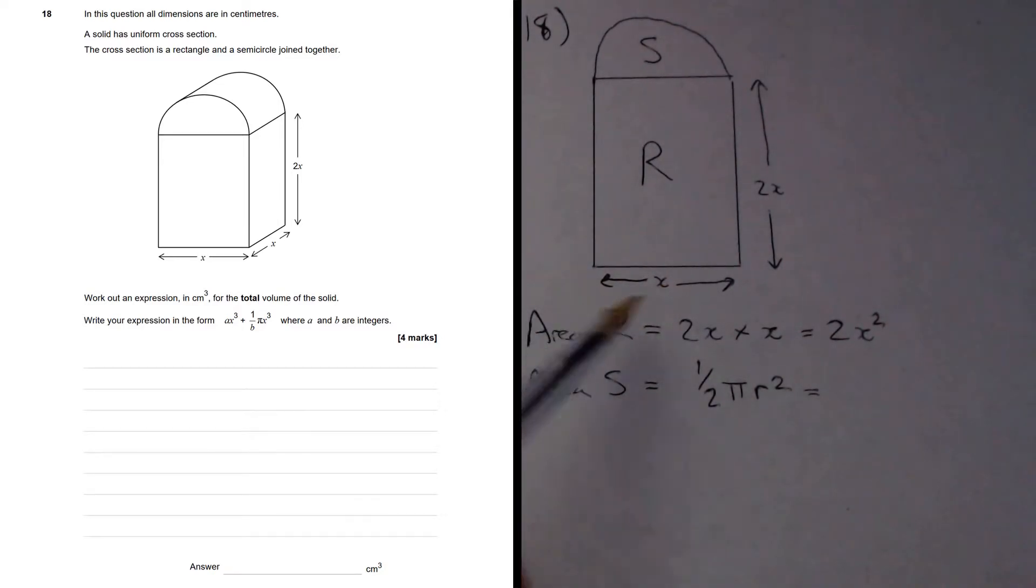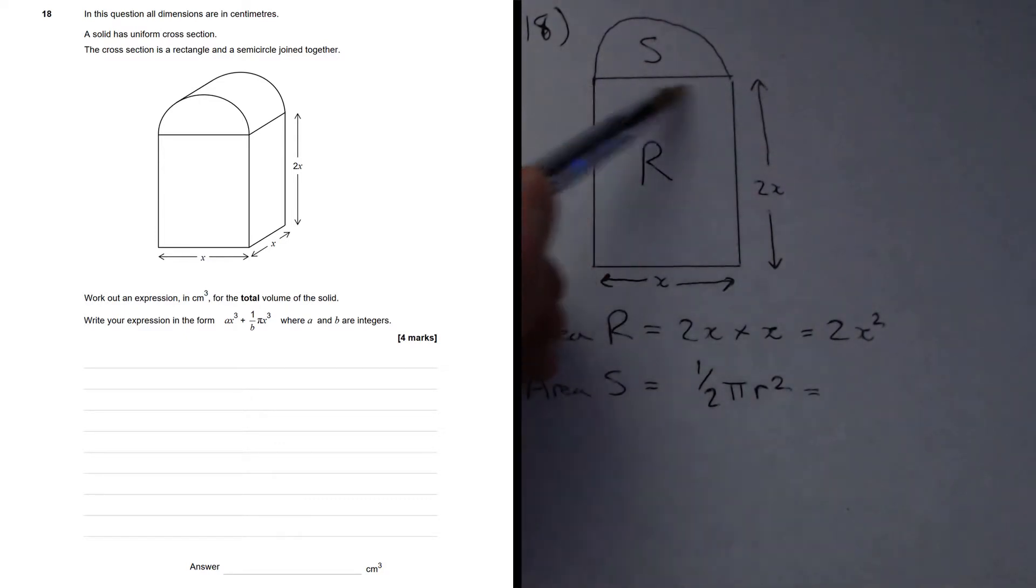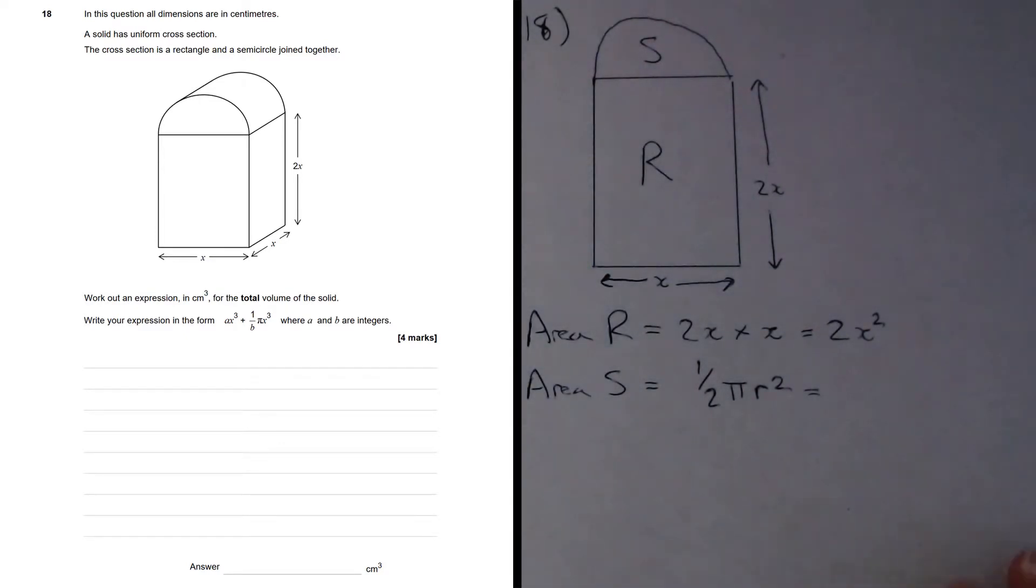And we can see that the diameter of the semicircle is x, so the radius is x over 2. So this is going to be half pi times the radius, which is x divided by 2, all squared.